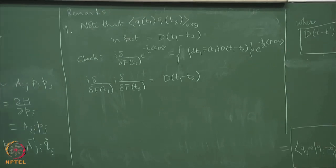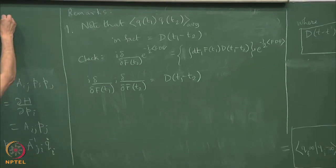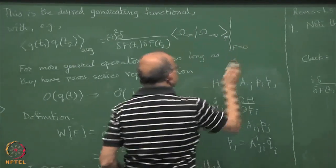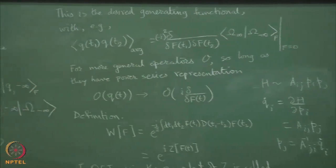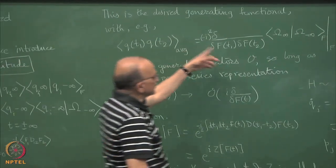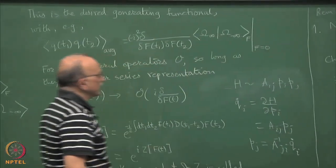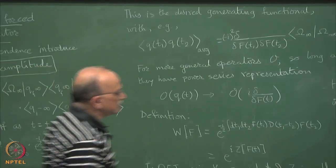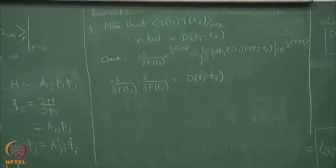This, but with F equal to 0. The averaging prescription says that you vary and then set the auxiliary variable to 0. Then you will get that; some details need to be checked, but I think this is correct. This is one thing.